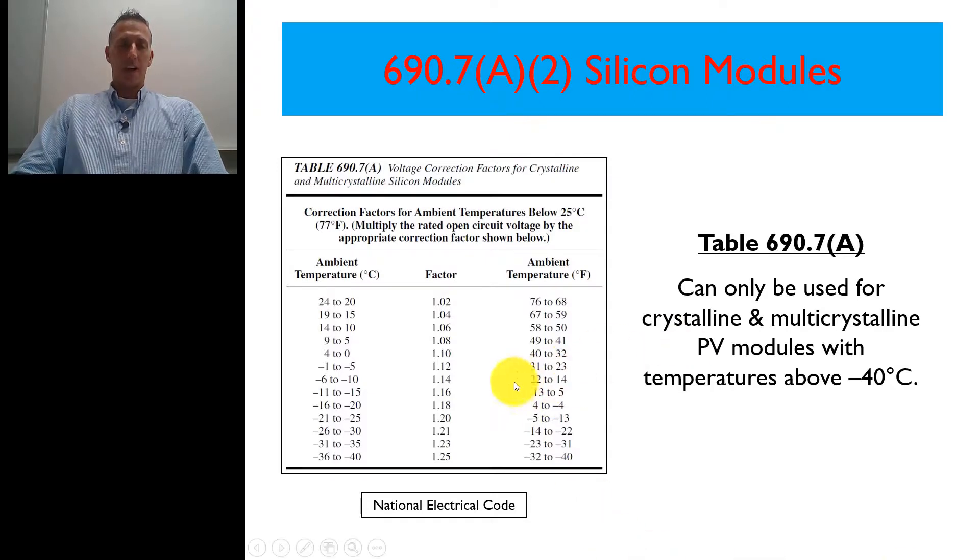So the two things you want to look at first: here's the table on the left hand side of the screen. It has the ambient temperature that the system would be exposed to in Celsius on the left hand side. On the right hand side, it's the ambient temperature in Fahrenheit.